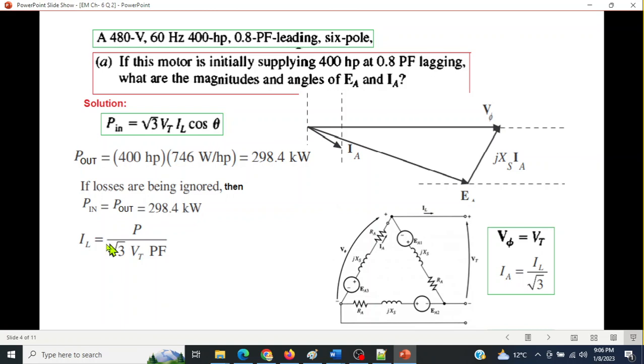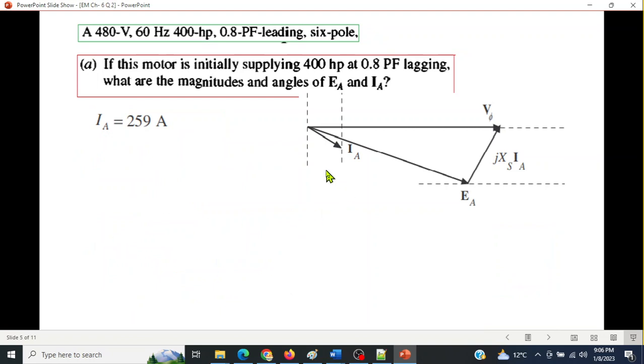And now using this equation, we'll find IL, which is P divided by under root 3 VT power factor 0.8. So this 298.4 divided by under root 3, VT is the terminal voltage 480 multiplied by power factor 0.8. So the line current is 449 ampere. Now this is the magnitude of the line current. So we can find the magnitude of the phase current or armature current by dividing line current by under root 3. So this is the armature current Ia.